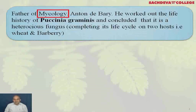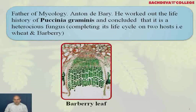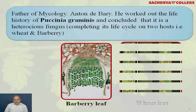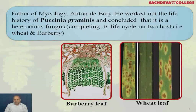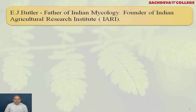The father of mycology is Anton de Bary. He worked out the life history of Puccinia graminis and concluded that it is a heteroecious fungus, meaning it completes its life cycle on two hosts: wheat and barberry. E.J. Butler is the father of Indian mycology and founder of the Indian Agricultural Research Institute (IARI), located earlier in Pusa, Bihar, but now in Delhi.